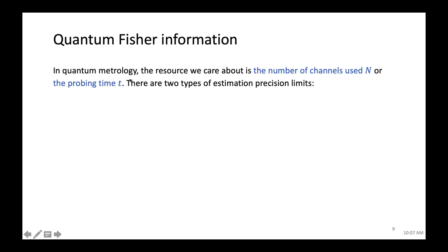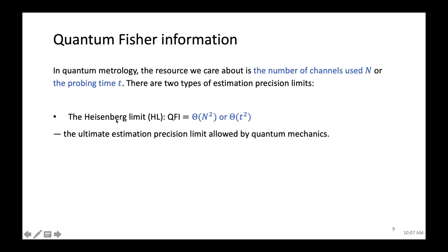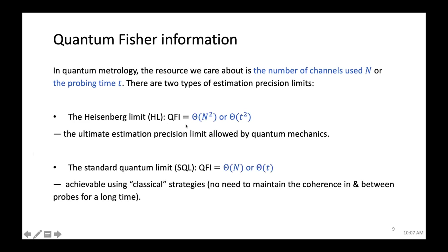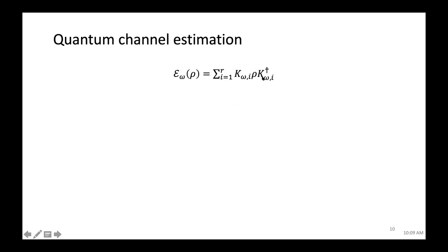To summarize quantum metrology: the resources we care about are the number of channel uses n or probing time t. There are two types of precision limits. The Heisenberg limit (HL) represents QFI proportional to n² or t²—the ultimate limit allowed by quantum mechanics. The standard quantum limit (SQL), also called the classical limit, represents QFI proportional to n or t, achievable using additivity of QFI without entangled states or long coherence.